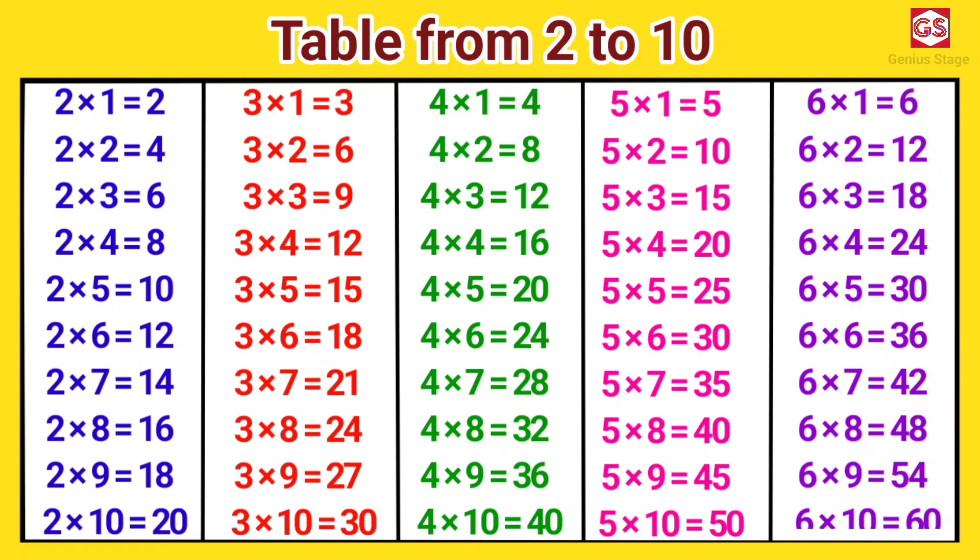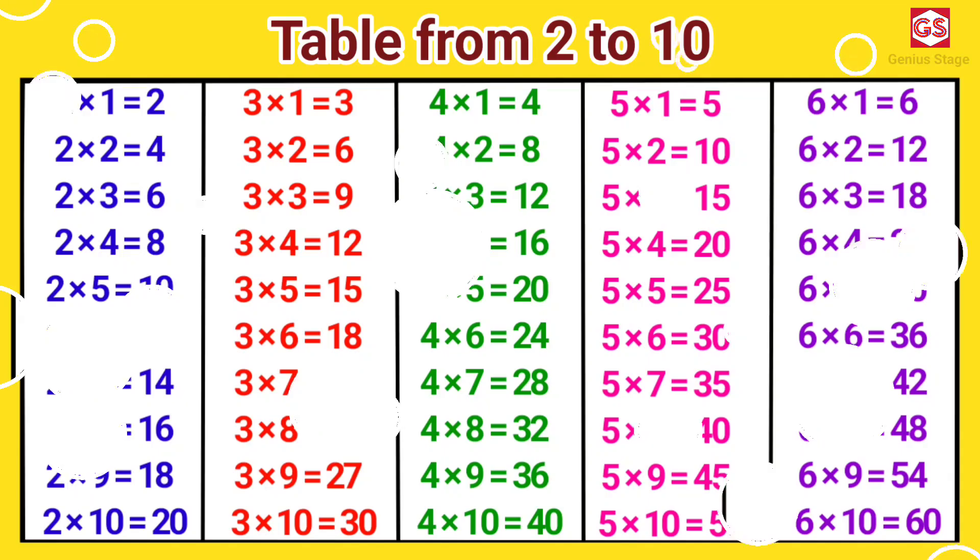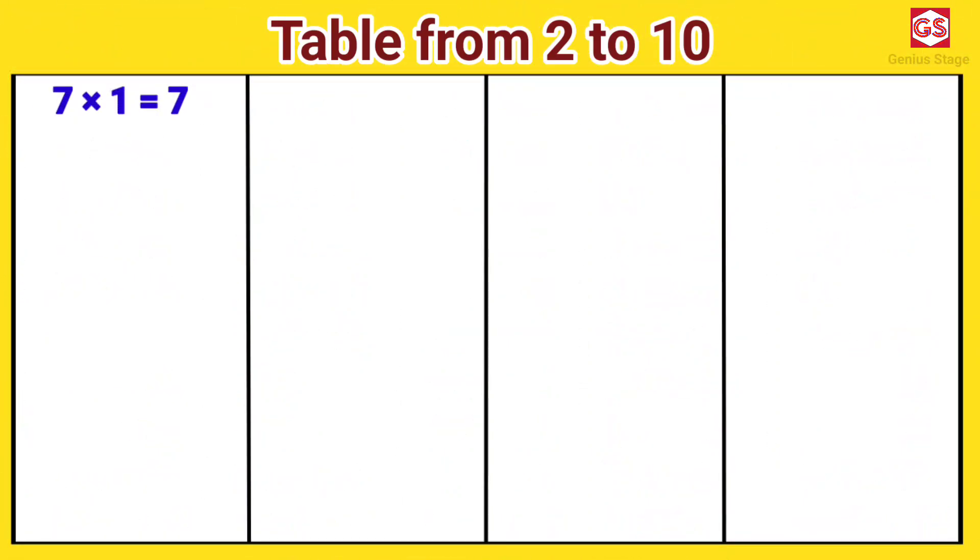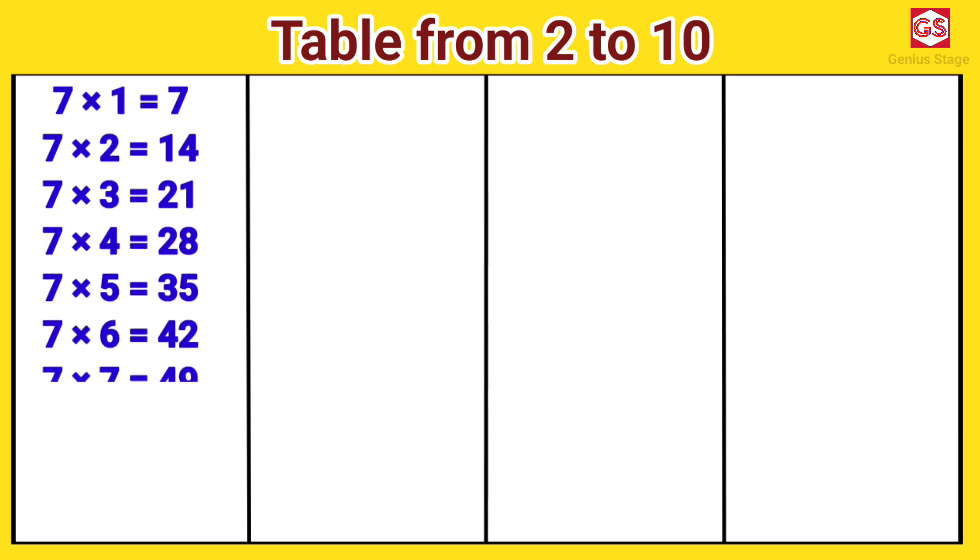6 tens are 60. 7 ones are 7. 7 twos are 14. 7 threes are 21. 7 fours are 28. 7 fives are 35. 7 sixes are 42. 7 sevens are 49. 7 eights are 56. 7 nines are 63. 7 tens are 70